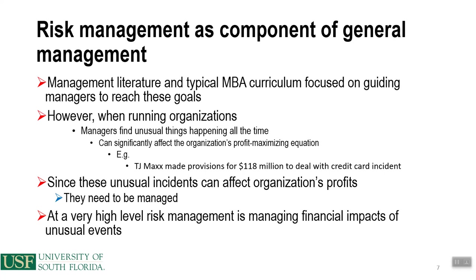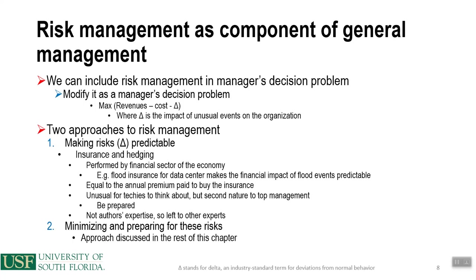Management literature and typical MBA curriculum has focused on guiding managers toward these goals. However, when running organizations, managers can find unusual things happening that significantly affect the profit-maximizing equation. For example, TJ Maxx made provisions for $118 million to deal with credit card incidents. At a very high level, risk management is managing the financial impacts of unusual events. We can modify the manager's decision problem: maximize revenues minus costs minus delta, where delta is the impact of unusual events on the organization.